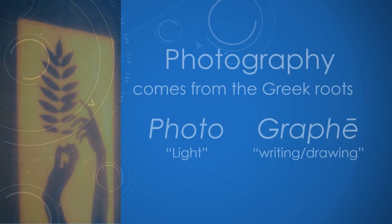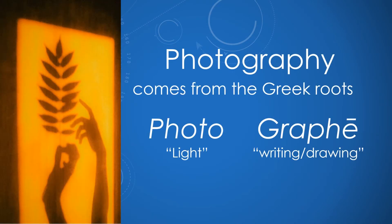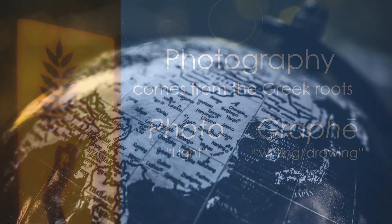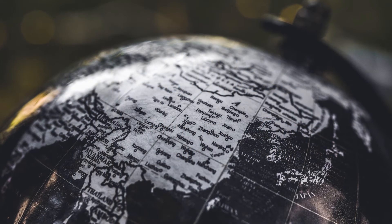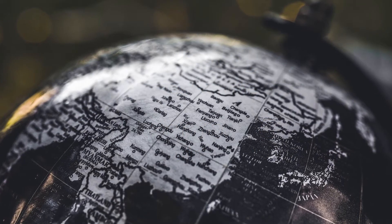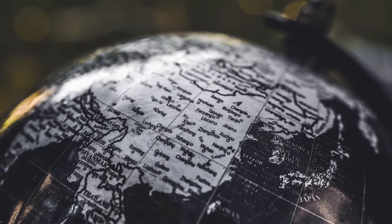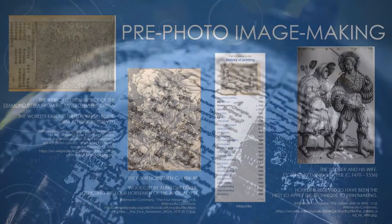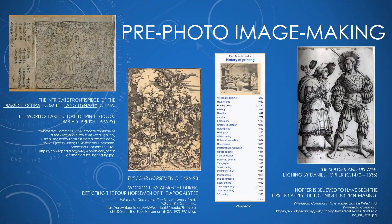The word photography comes from the Greek roots phos or photo meaning light and graphe meaning writing or drawing. So I want you to try and picture a world before photography. If you wanted to make an image before photography was invented you would have had to do it through drawing, painting, or printmaking.